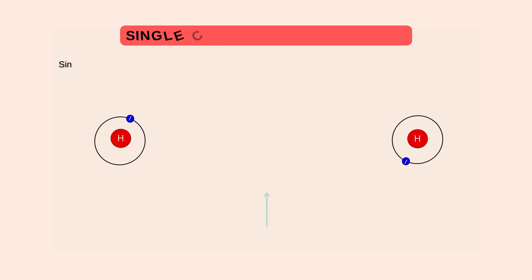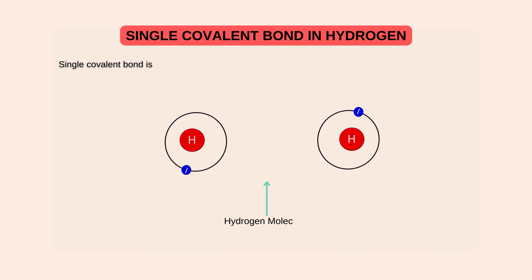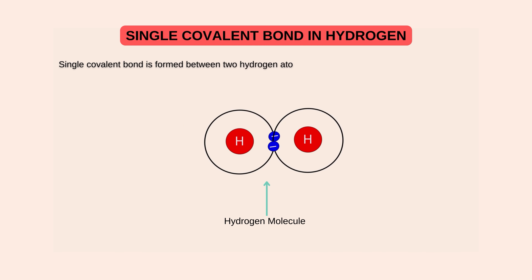Is ki examples mein sab se common example humare paas hydrogen molecule ki mojood hai. Hydrogen atom, as we all know, its atomic number is one and it has only one electron in its valence shell. Is ko stability achieve karne ke liye mazeed ek electron ki zarurat hai. Aur apne is ek electron ki zarurat ko mukammal karne ke liye, yeh dusre hydrogen atom ke saat single covalent bond banata hai. As you can see in the video, dono hydrogen atom apne valence ka ek ek electron mutually share karte hai, aur valency complete karke stability achieve karte hai, aur hydrogen molecule mein convert ho jate hai.